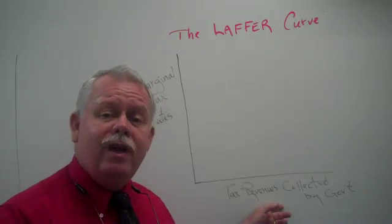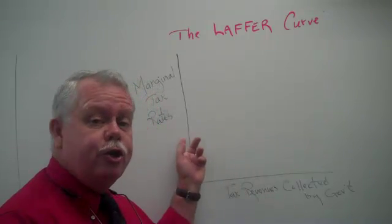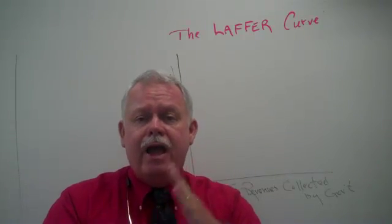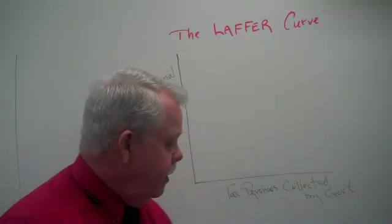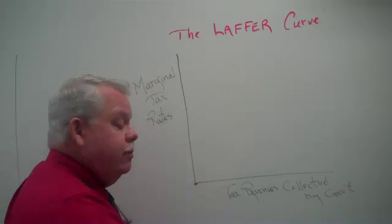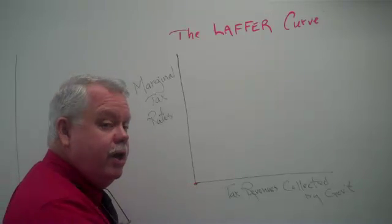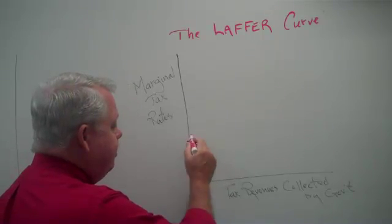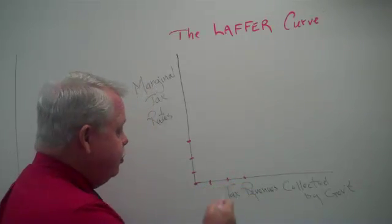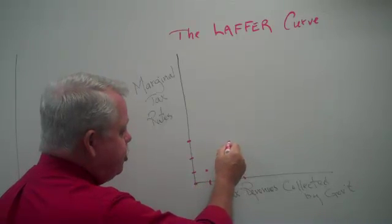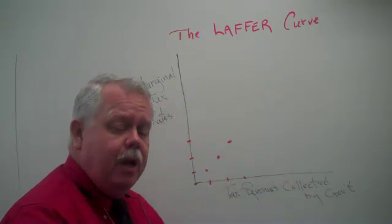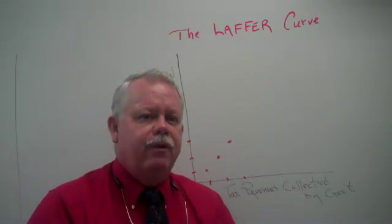Tax revenues collected by government will behave when marginal tax rates rise. Remember, marginal tax rates are the tax rate you pay on the last dollars that you earn. Now to begin with, if you had a zero tax rate, of course you wouldn't be collecting any tax revenues. As you begin to raise your tax rates, you would expect that people will pay correspondingly more taxes — a relationship with a positive slope. Higher tax rates, you collect more money. No argument so far with the Laffer curve.